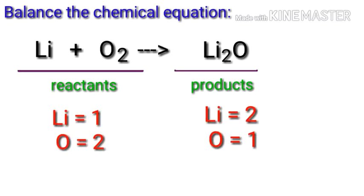If we look at this equation we can see that the equation is not balanced. In the reactants side there are one lithium atom, two oxygen atoms. On the product side there are two lithium atoms and one oxygen atom. The number of atoms is not balanced on both sides.